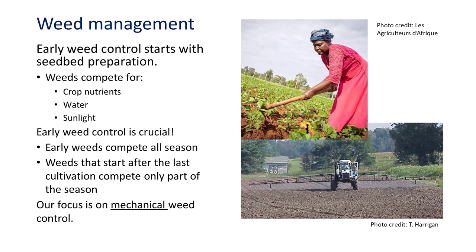Weeds that start early are the most damaging to grain yields because they compete throughout the entire season. Weeds that start after the last cultivation are less harmful because they only compete for part of the season.